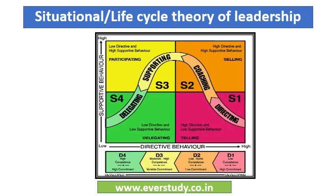This is the diagram of the life cycle theory of leadership. As you can see, it goes from right to left, showing S1, S2, S3, and S4 on one axis, and D1, D2, D3, and D4 on another. I will explain each one by one — please compare these with the diagram as we go, as it will help you understand better.